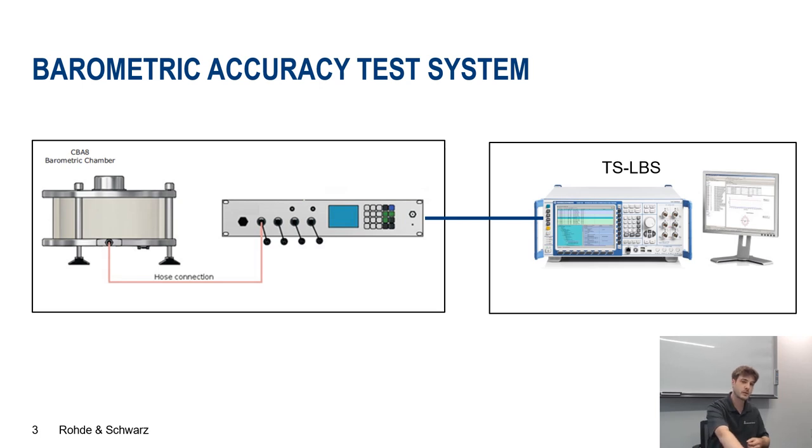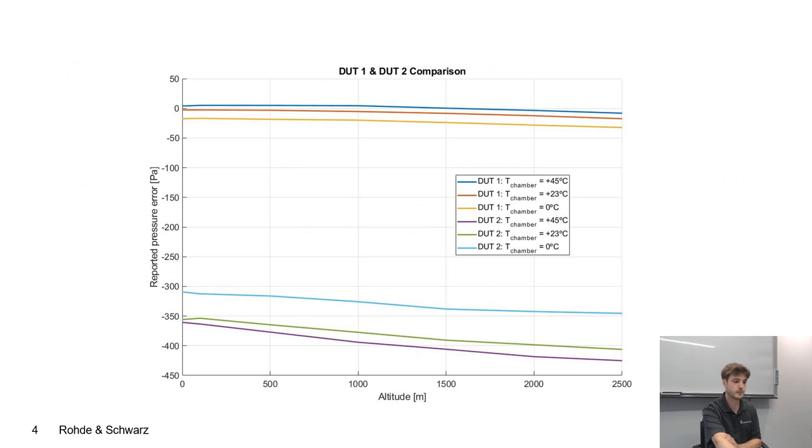I would like to present some interesting findings that we collected with that device. Here you can see a comparison of two different devices under test, two different smartphones. The first one, DUT1, is performing tremendously well over a wide range of temperatures and even over a wide range of altitude levels. As you can see here, we could actually reach this floor level accuracy mandate from FCC easily because 50 Pascal somehow translates to that accuracy requirement. So DUT1 would easily pass that requirement.